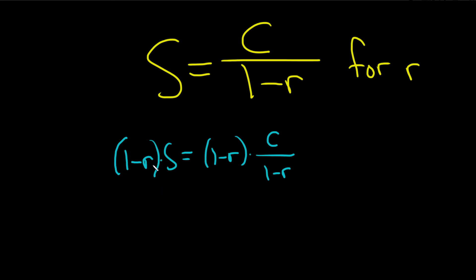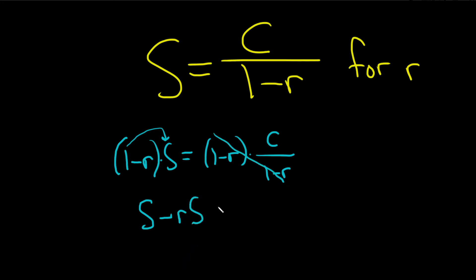Here on the left, we distribute: 1 times s is s, minus r times s is rs. On the right, the 1 minus r terms cancel, so we just get c.